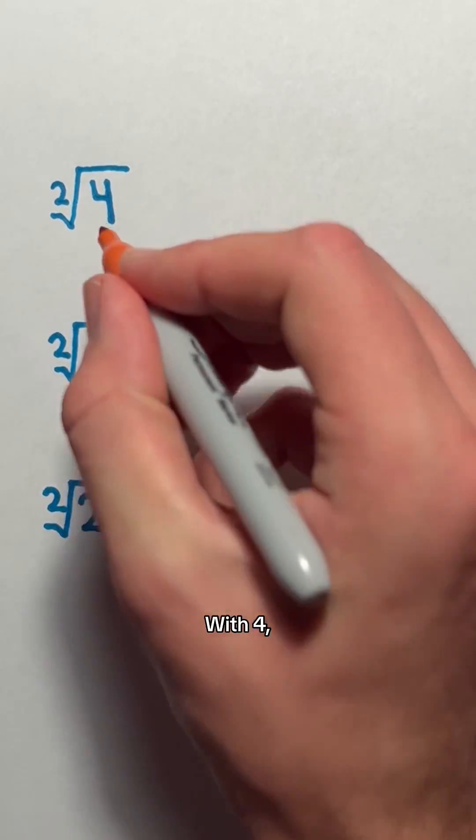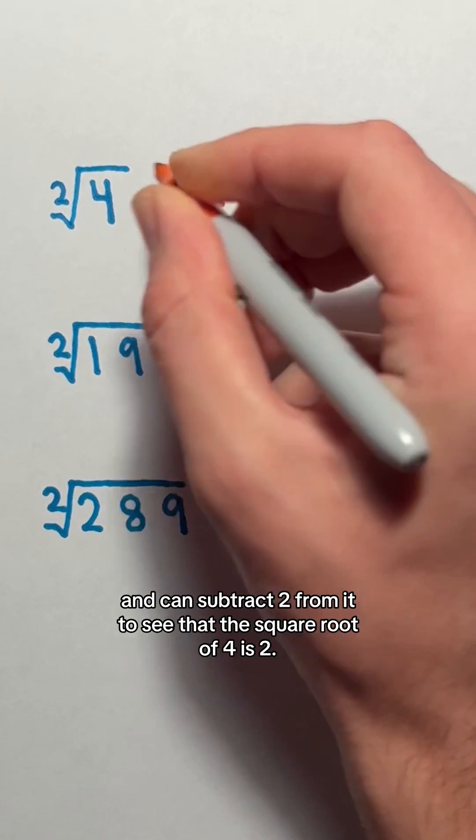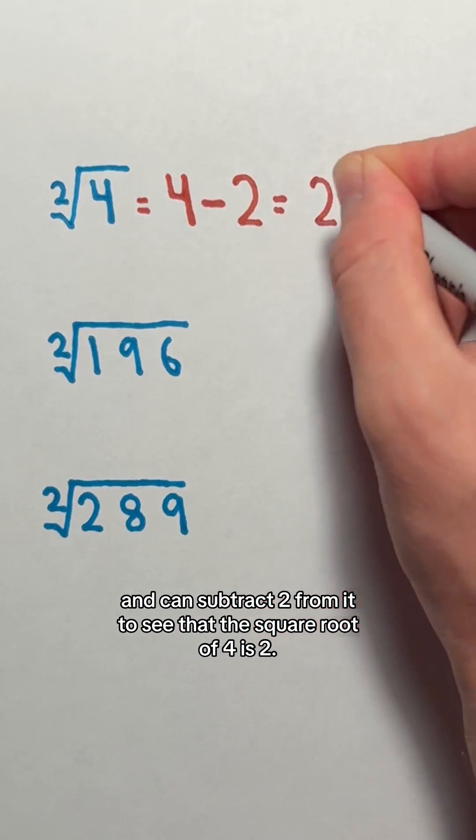With 4, we just have 4 and can subtract 2 from it to see that the square root of 4 is 2.